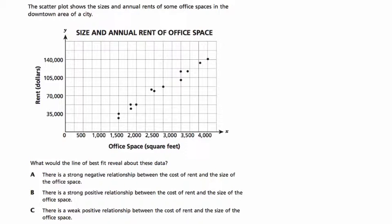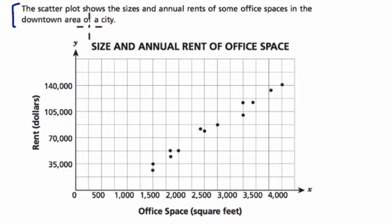All right, so I'm going to read the question with you, and let's start up here. It says the scatter plot shows, so we have a scatter plot, it's just a bunch of points on a graph, shows the sizes and annual rents of some office spaces in the downtown area of a city.